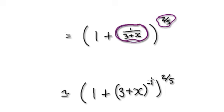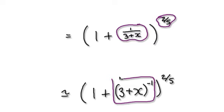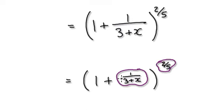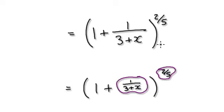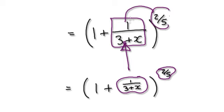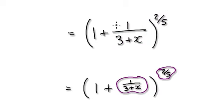So visualize this thing here as to the power of minus 1, which would then give you this. And don't forget — when we take an approximation of an approximation, when you approximate this, you're going to incur some sort of error. And then when you take the approximation of the approximation, you're going to incur an error on top of an error. Just bear that in mind.